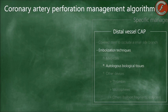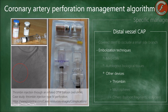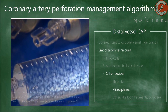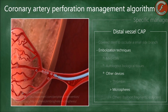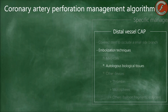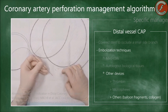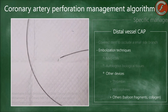Other devices include thrombin, an enzyme that stimulates fibrin formation, available in the form of solutions or gels that can be embolized through microcatheters to seal coronary perforations in distal beds. Microspheres are spherical, hydrophilic, non-absorbable particles of variable size which can be administered through a microcatheter to seal distal perforations similarly to coronary coils. Some authors have also described distal embolization using fragments cut from angioplasty balloons, collagen fragments from percutaneous femoral closure devices, or even pieces of skin.